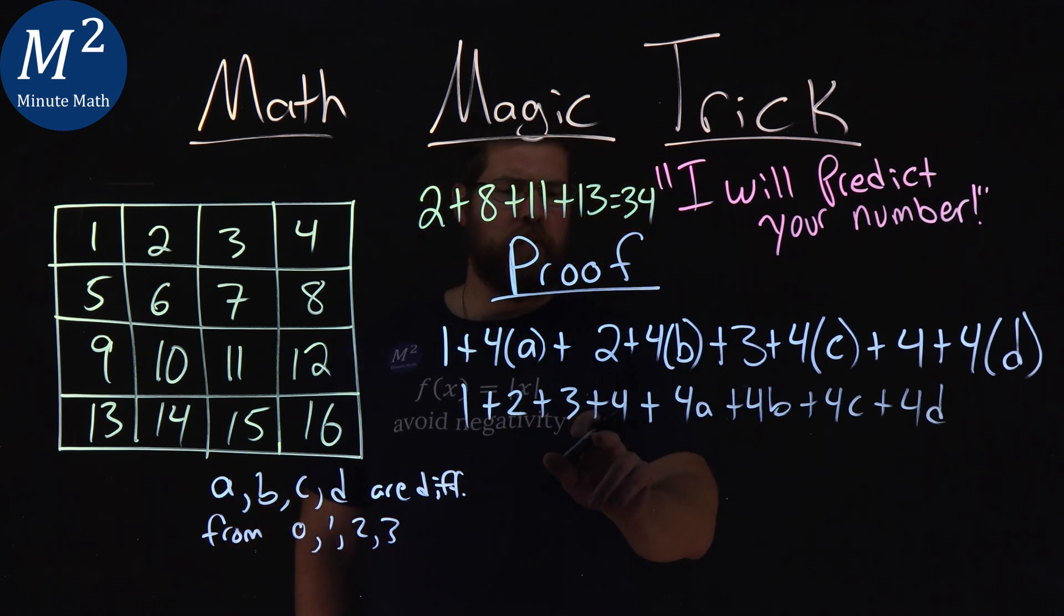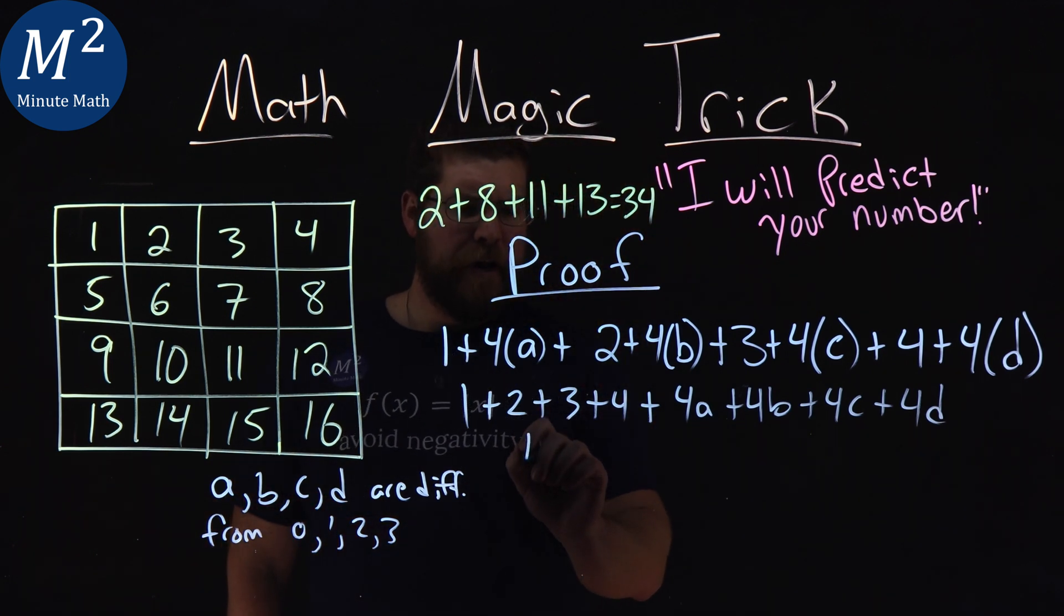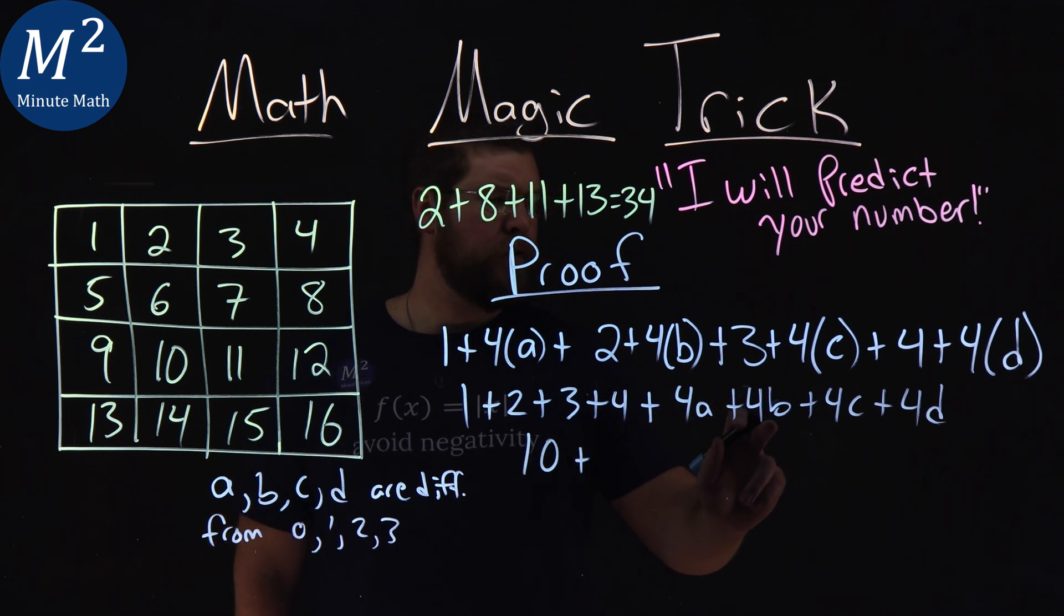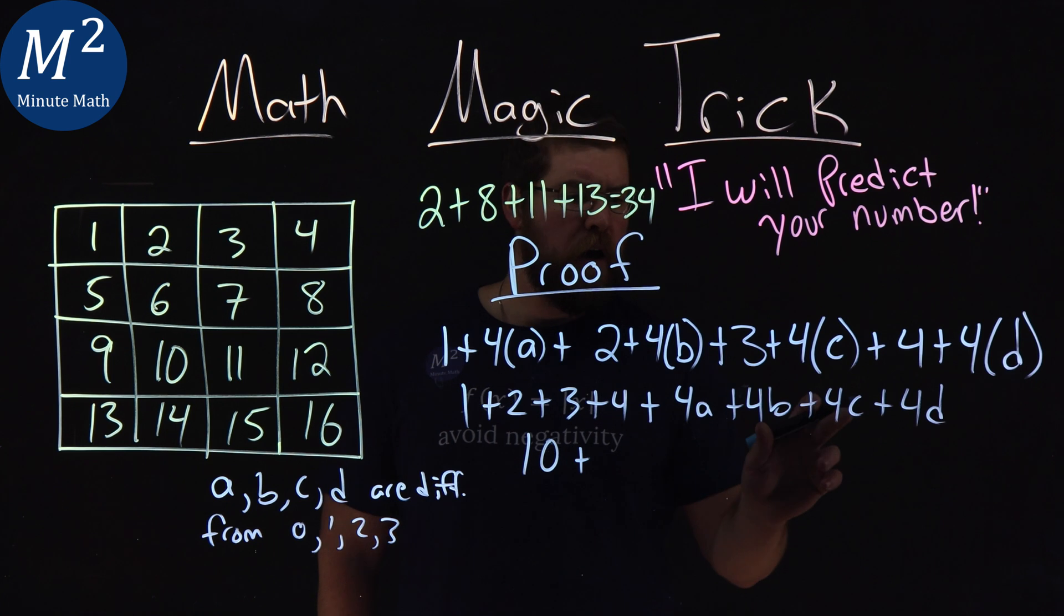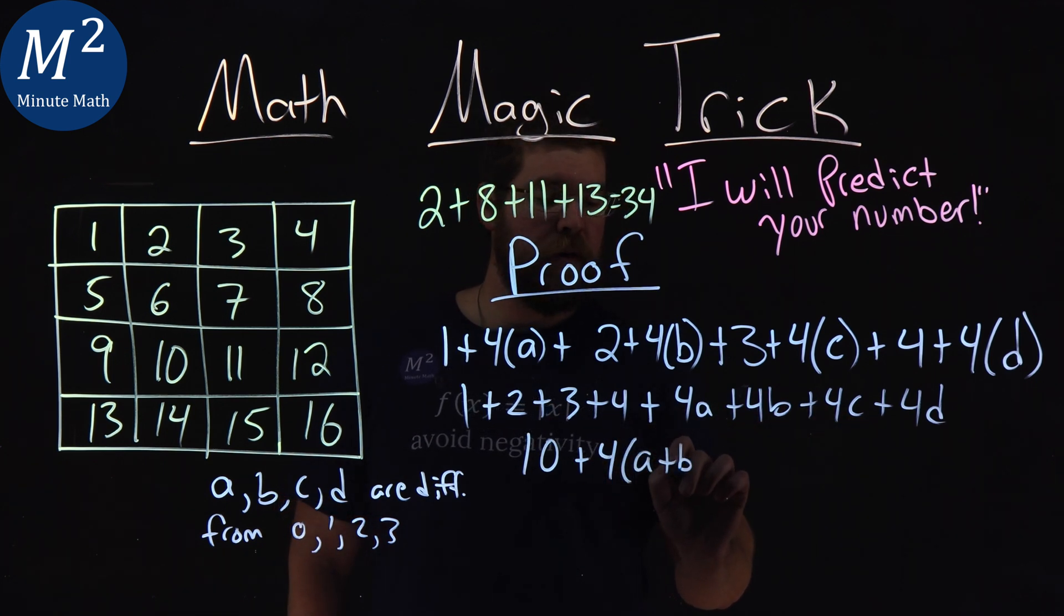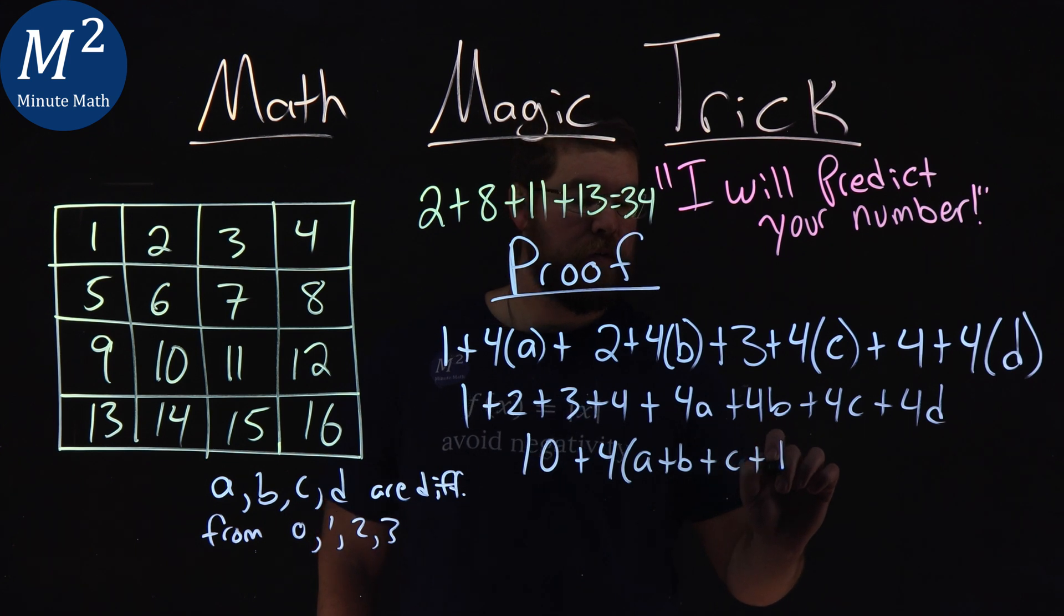Well, one plus two plus three plus four comes out to be ten. That's pretty easy. Then, with the rules of mathematics, we can bring out the fours. Pull a four out from each part, and we have four times a plus b plus c plus d.